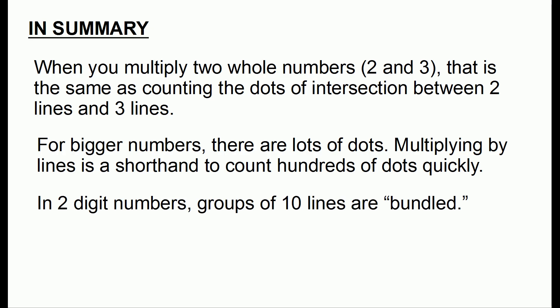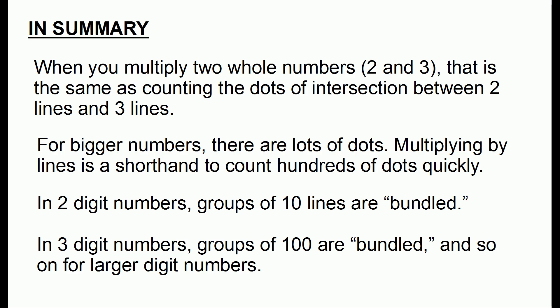In two digit numbers, we group lines of tens as a bundle. And in three digit numbers or higher numbers, we keep bundling powers of ten. And we end up with the vertical alignment, which gives us the answers to our final number.